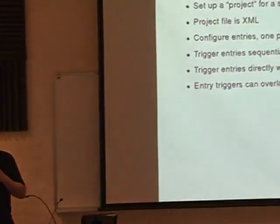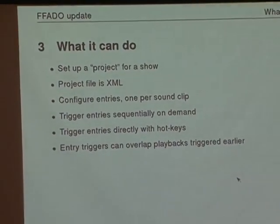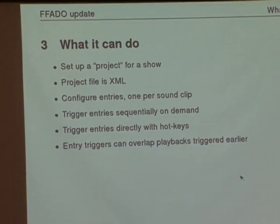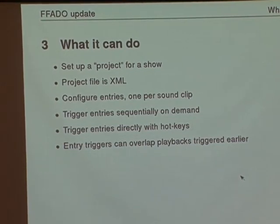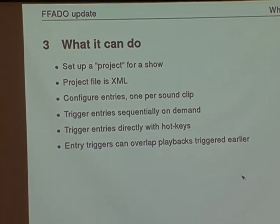For a given theatre program you set up a project for the show. The project file is XML with a very simple syntax, which is helpful because at the moment the UI I inherited is a little bit difficult if you've got a whole bunch of effects to add. It's actually much easier to edit the XML file directly than it is within the GUI. I hope to change that, but because it's XML, it does make that possible.